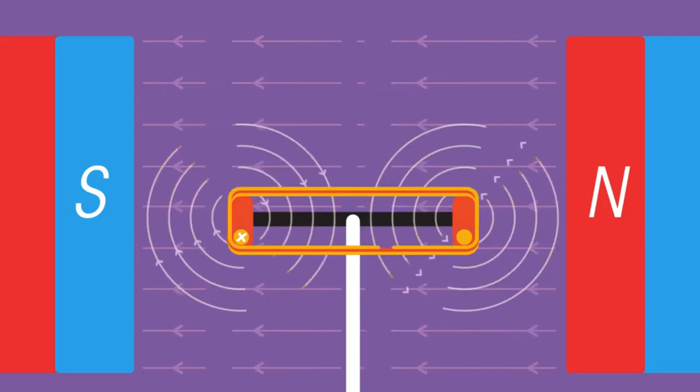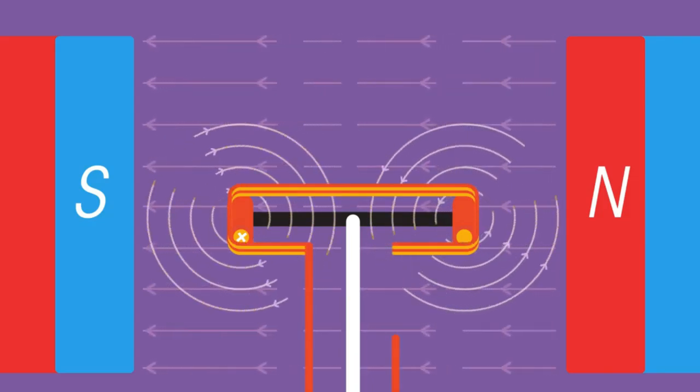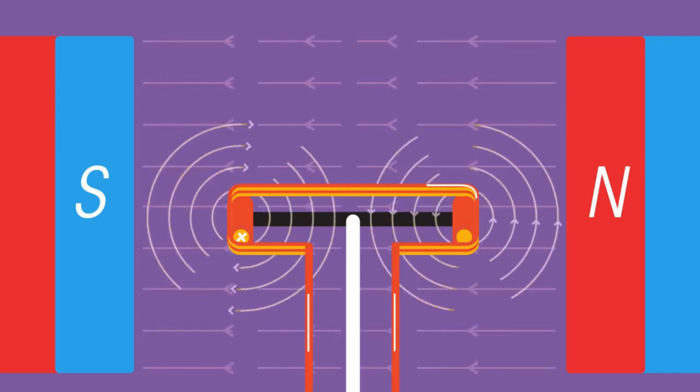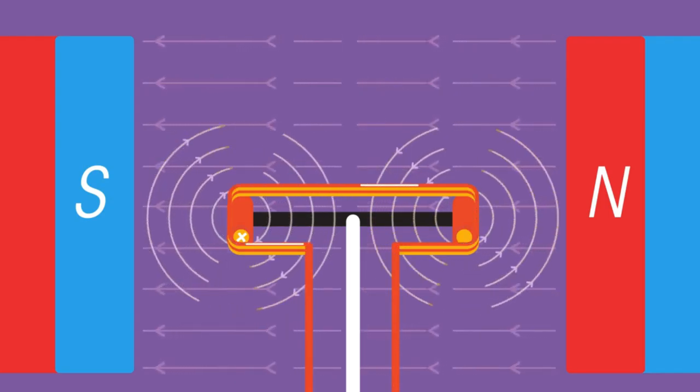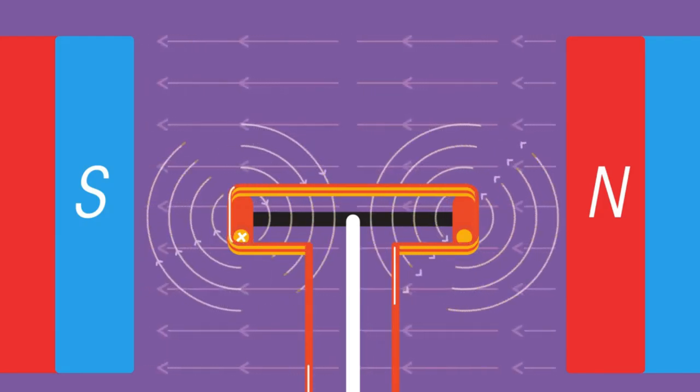Looping the wire around many times will increase the turning force on the motor. The clever bit is how to supply a current to a spinning coil so that it always flows in the same direction, ensuring that the upward and downward forces are always on the same side.